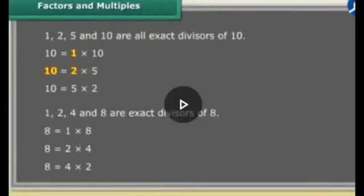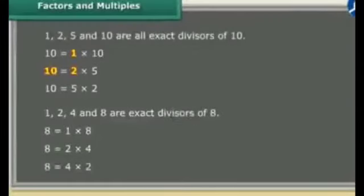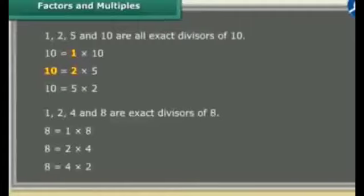Our first topic is factors and multiples. Here you can see 1, 2, 5 and 10 are all exact divisors of 10. So 1, 2, 5 and 10 — what do we do here? 10 is completely divided, which means the remainder is zero.